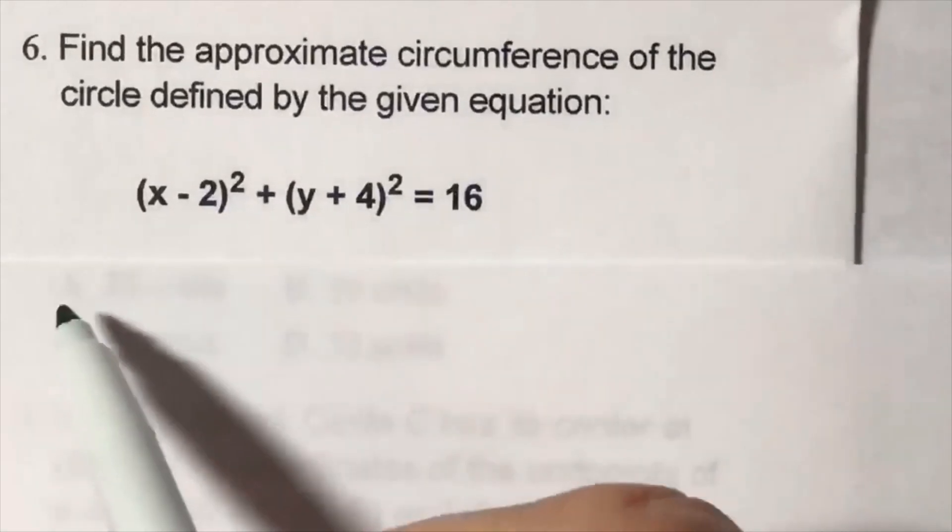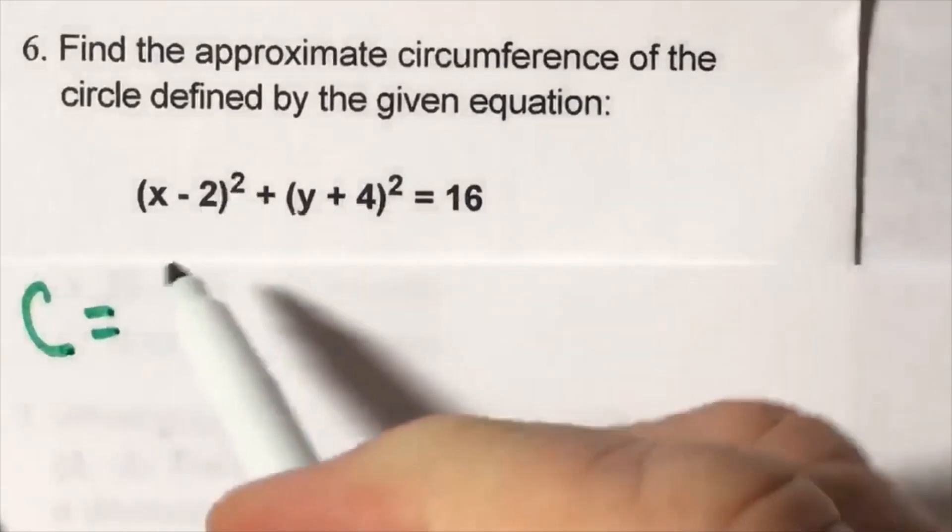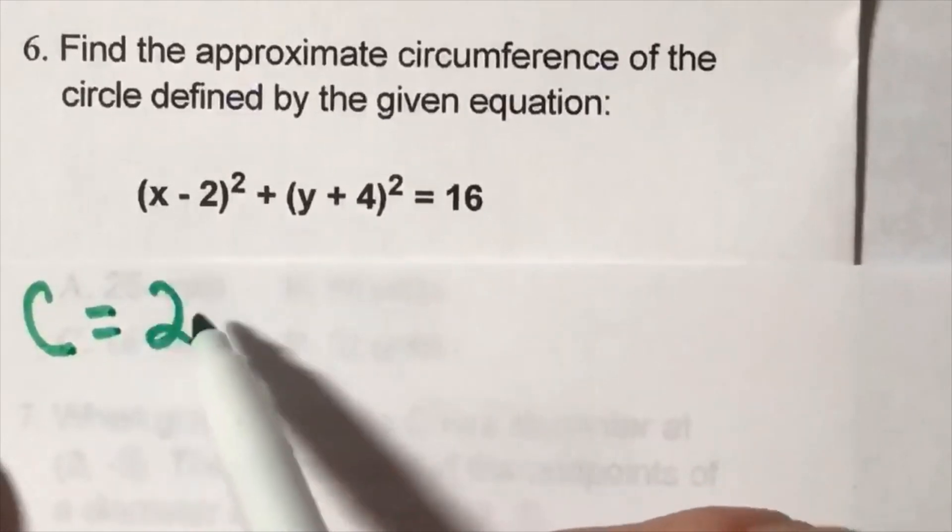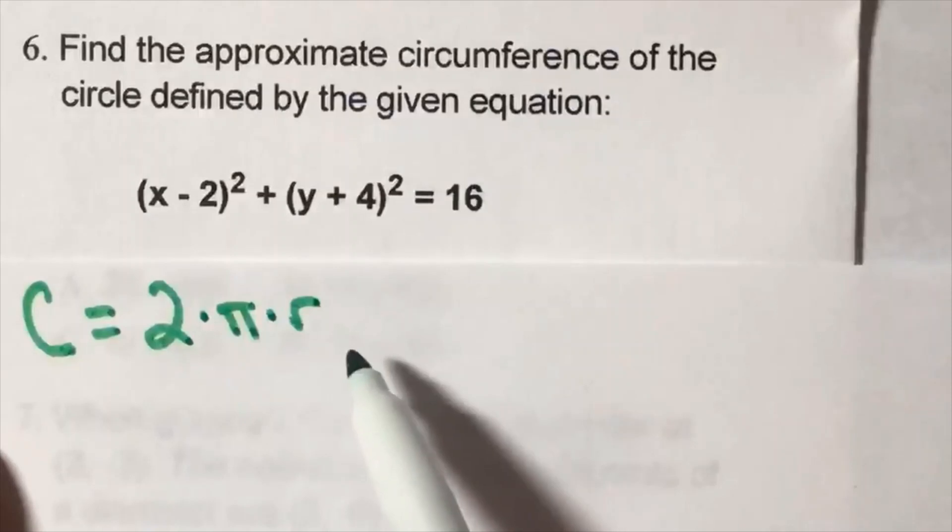...you'll find that the circumference of a circle is 2 times pi times the radius.